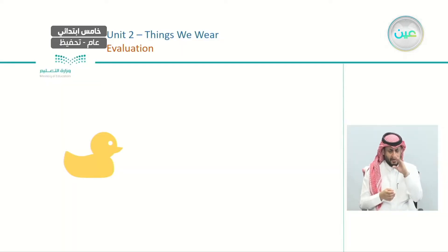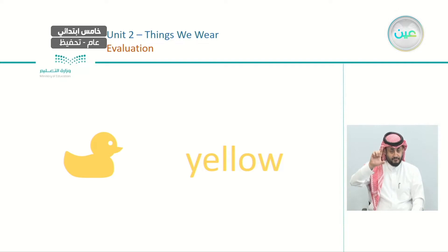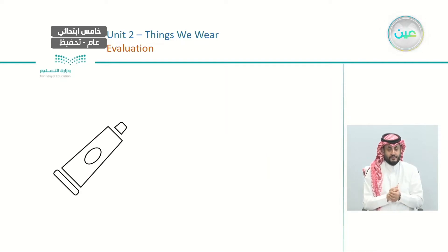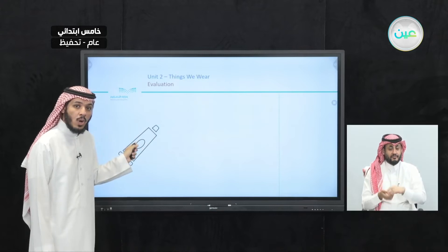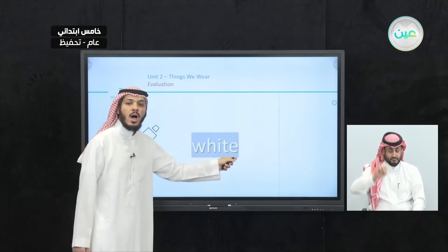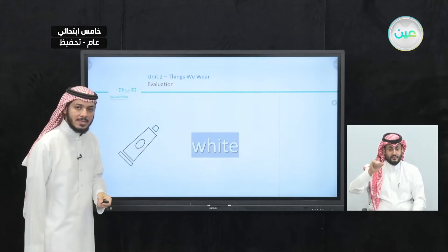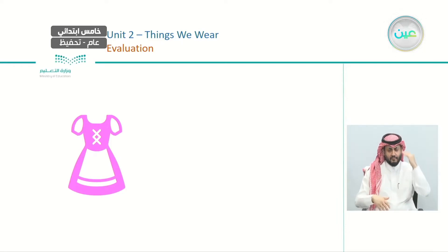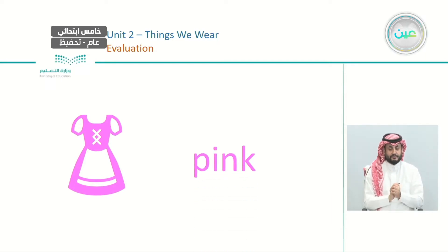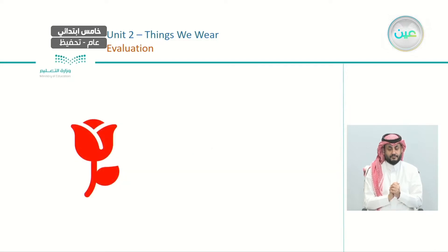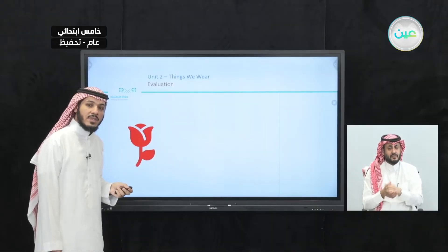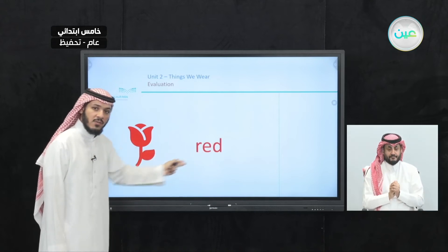After that, we have toothpaste — it's white. We have a white toothpaste. Then another dress — the color is pink. A pink dress. Now, we have a flower — the color is red. A red flower.